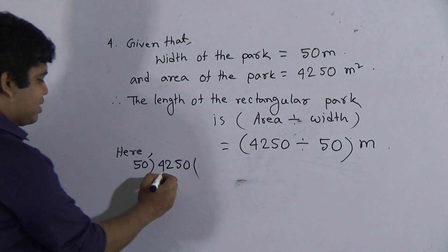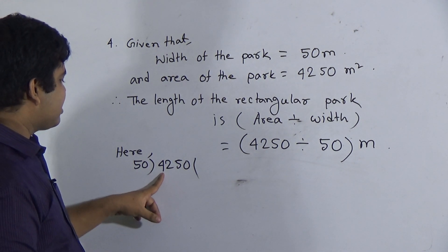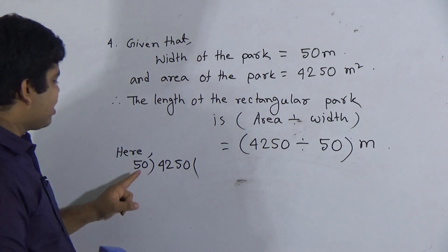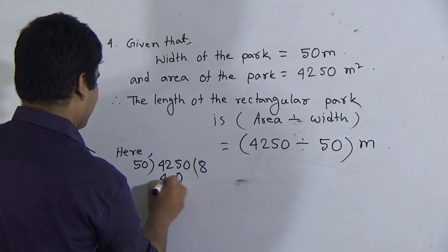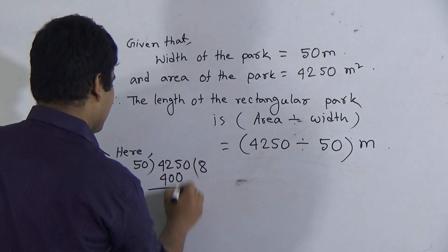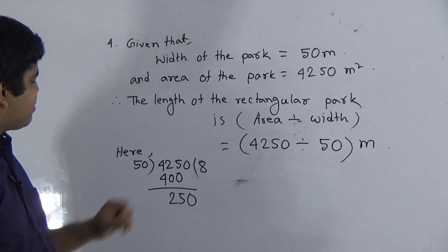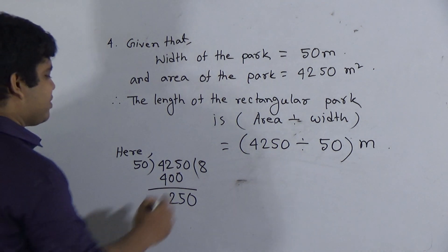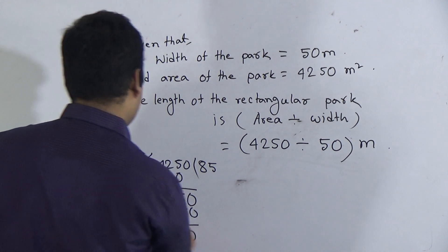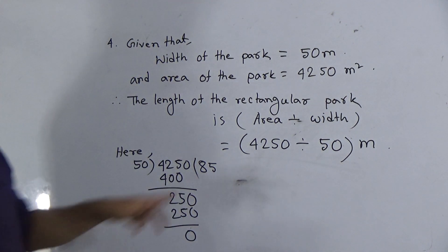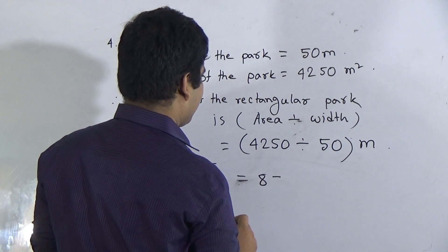At first, we take two digits, which is 42. This is smaller than 50. For this reason, we take three digits from here, and it is 425. In 425, 50 goes in eight times. That means, eight zeros are zero and eight fives are 40. Now, we do subtraction and we get 25. A zero is placed here. Now, the number is 250. In 250, 50 goes in five times. So, five zeros are zero and five fives are 25. After subtracting, we get zero. So, 85 is the required answer. That means, 85 meter is the length of this rectangular shaped park.